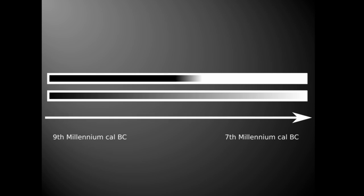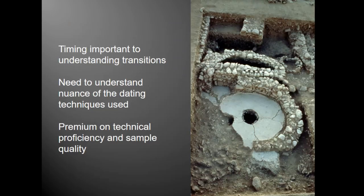So, to summarize: if we want to understand archaeological transitions, it can be useful to unpack them into constituent elements, rather than looking for a single mesolithic-neolithic or middle-to-late PPNB boundary. It can be productive to unpack them into strands of evidence — focus on one thing, or a whole lot of things in isolation, and then render them together. Regardless of how we do it, we need to understand the nuances of the techniques we're using.